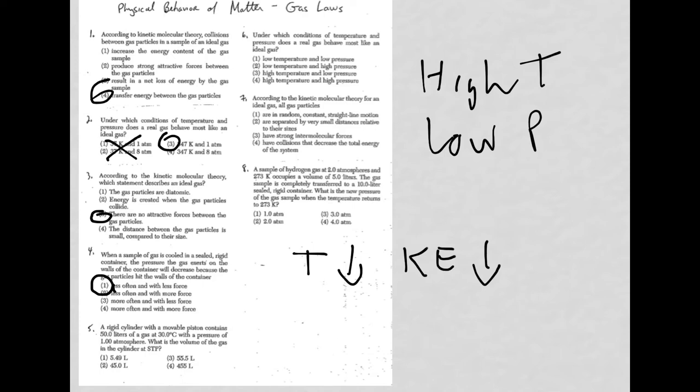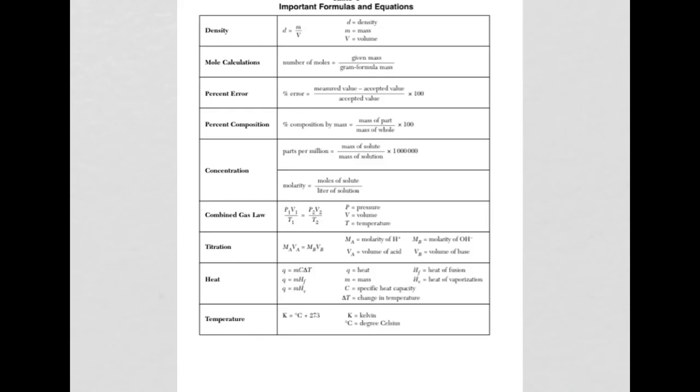Check out question five. All right, so we have a cylinder here. We have a movable piston. We've got 50 liters. We're at 30 degrees Celsius, one atmosphere. And then what is the volume of the gas in the cylinder at STP? So we're dealing with a combined gas law problem. And if we go to reference table D, here it is. The combined gas law. Now, one thing to always remember with the combined gas law is, in any gas law calculation, temperature has to be in Kelvin.